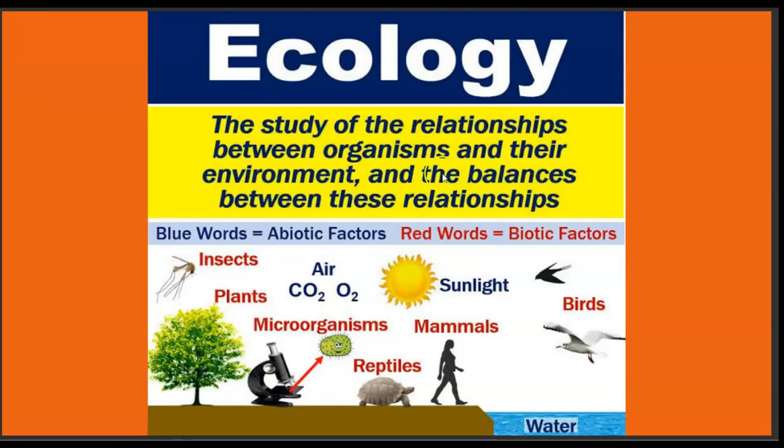There is a diagram here. The definition given is: ecology is the study of the relationship between organisms and their environment, and the balances between those relationships. For example, human beings have a balanced relationship — they do not eat each other — so there are balanced relationships studied in ecology.